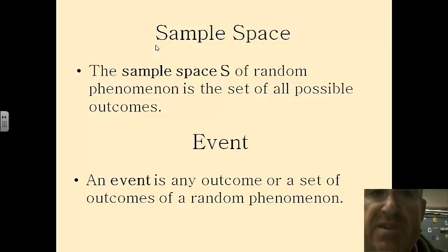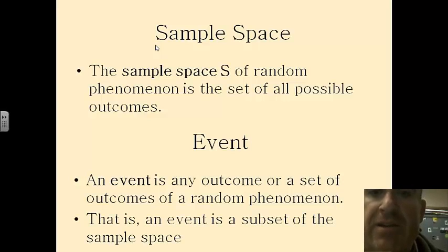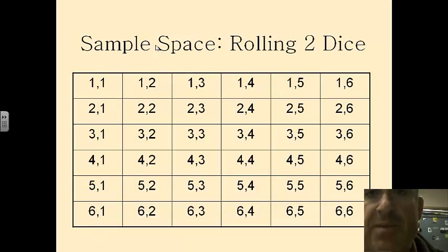An event is the specific outcome. So if I flip a coin, the outcome is I got a tails. So that's the event. So an event is a subset of the sample space.